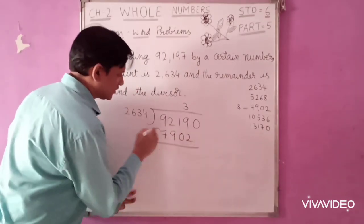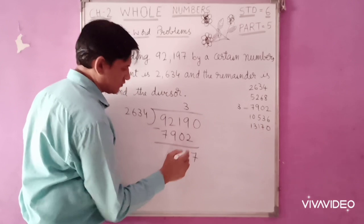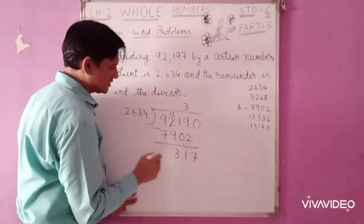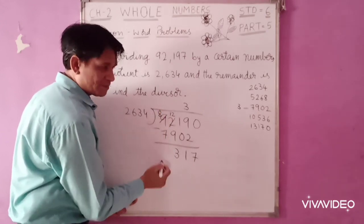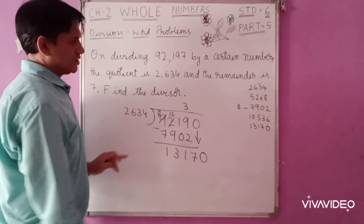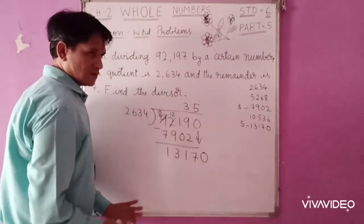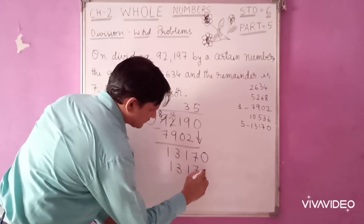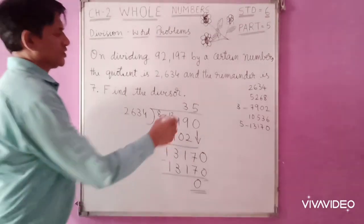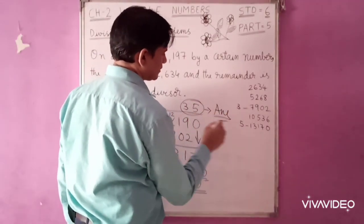When you subtract: 9 minus 2 is 7, 1 minus 0 is 1, 12 minus 9 is 3, 8 minus 7 is 1. Carry down this 0. You can see here 2634 times 5 is 13170. So the remainder is 0. So the required divisor is 35.